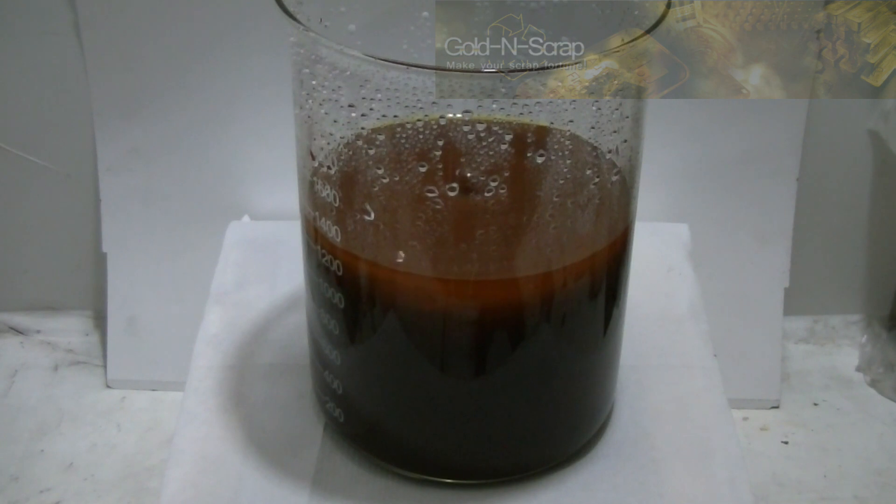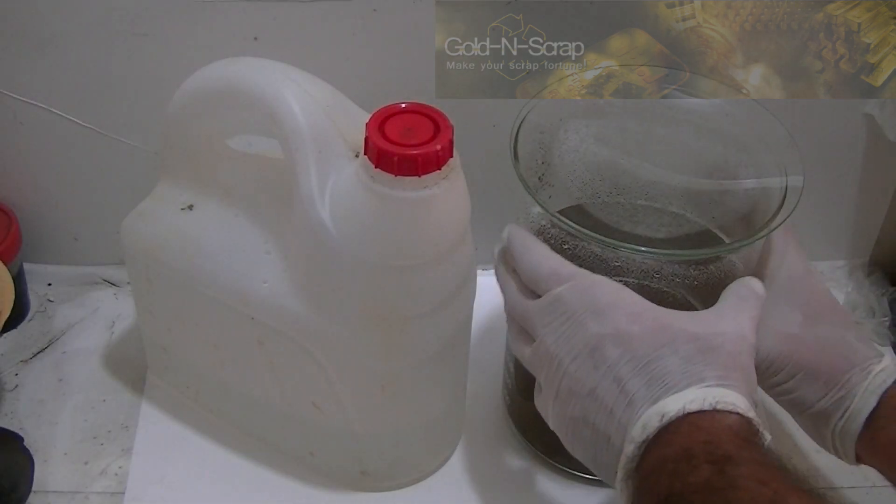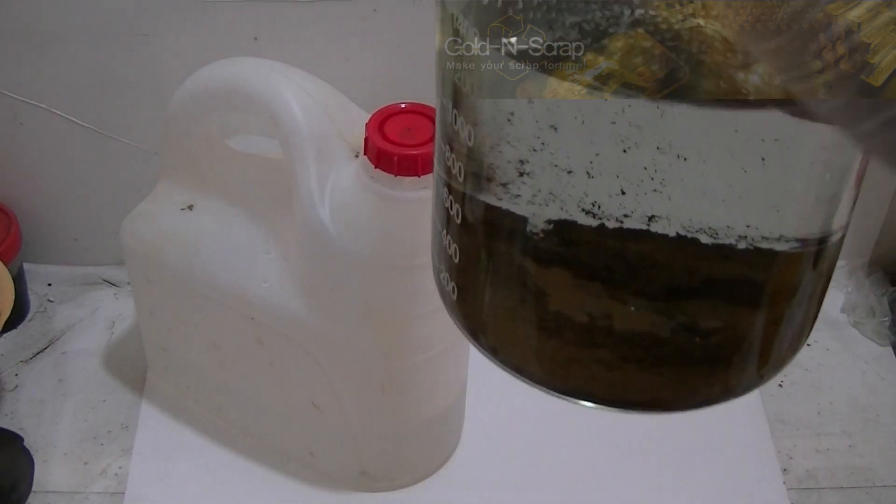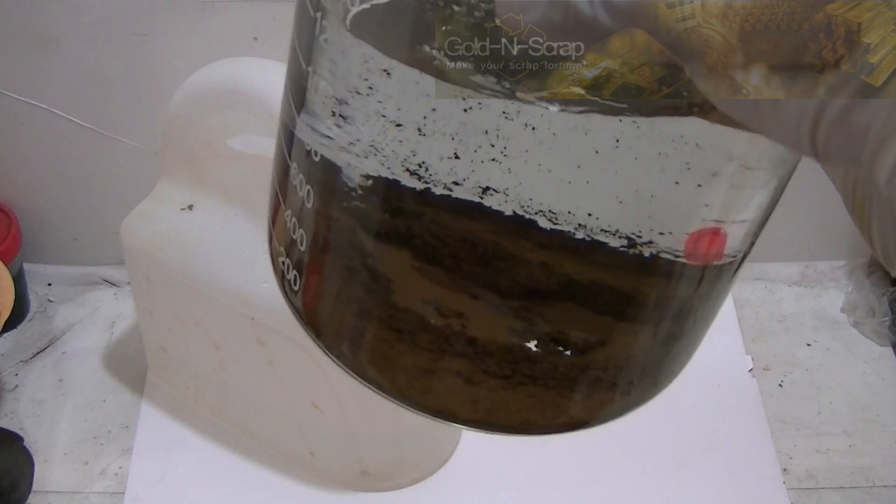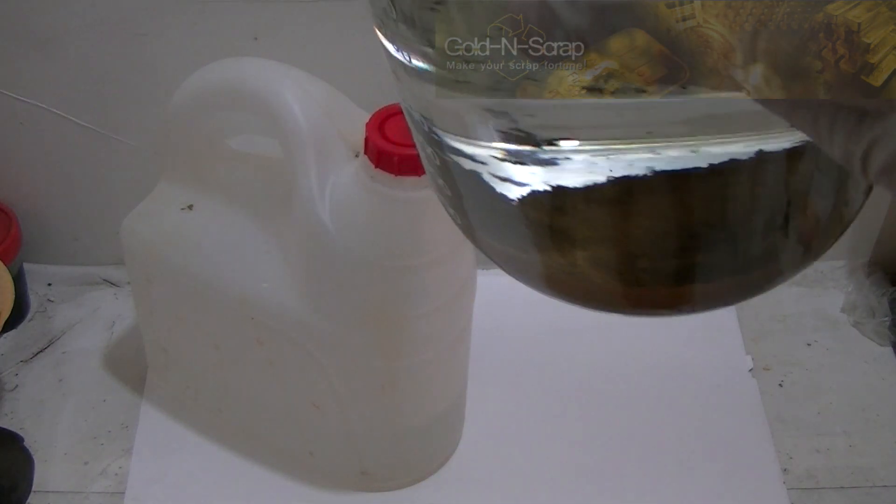The solution is again left to settle overnight. Here you can see the gold powder all settled to the bottom of the flask and the supernatant is practically colorless. This is a good indication for purity.